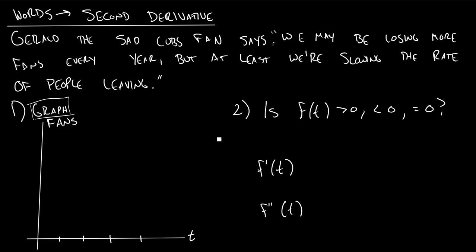Gerald, the sad Cubs fan, says that we may be losing lots of fans every year, but at least we're slowing the rate at which people are leaving our fan base. The Cubs have been doing bad, people are leaving for a long time. Gerald says this, but what does this mean?